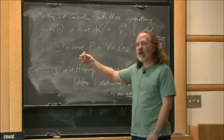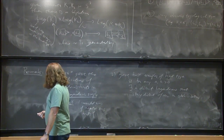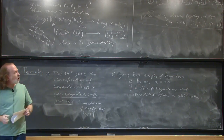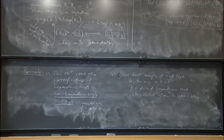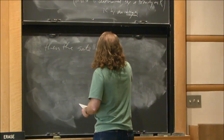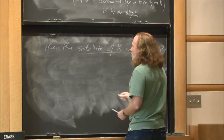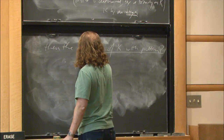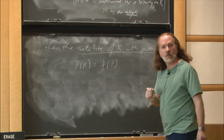Our knots are in R3 or S3, so they have a Seifert surface and a Seifert framing. Any other framing, you just say how it differs from the Seifert framing. These are the three ingredients you need to define the satellite. The satellite of K with pattern P is the knot P(K) — by definition, just the image of P under the diffeomorphism phi. You should really think of any given pattern as giving you a function from the set of knots to the set of knots. If n is 0 — using the Seifert framing — then we write P(K) = P_0(K).